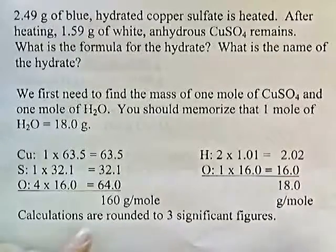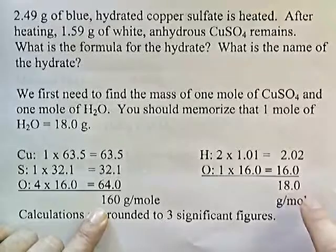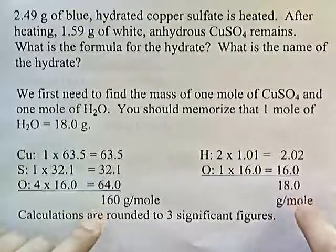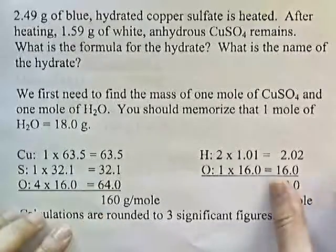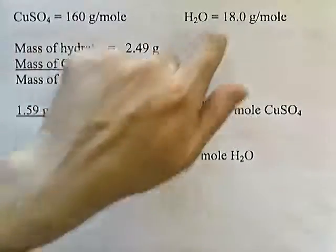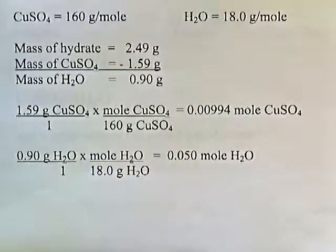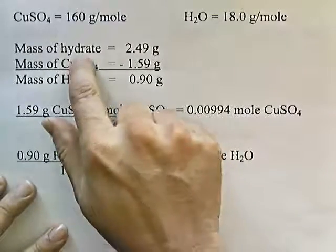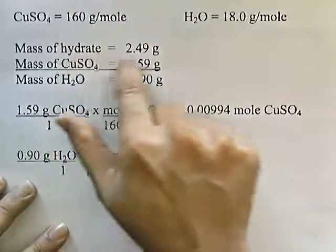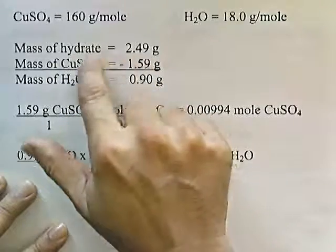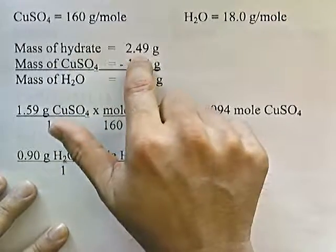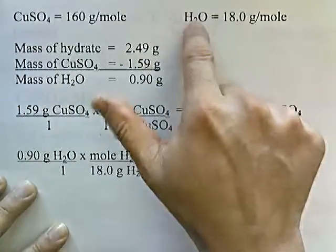So we have the molar mass of copper sulfate and the molar mass of water. We're going to take these values onto the next page. Now the next thing we're going to do is figure out how much water was in the crystal. They tell you the total mass of the crystal which contains the water is 2.49. So this 2.49 represents the copper sulfate combined with the water.